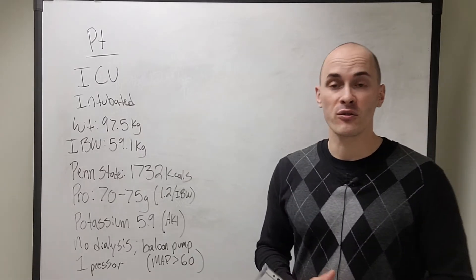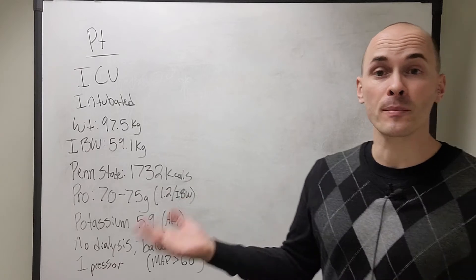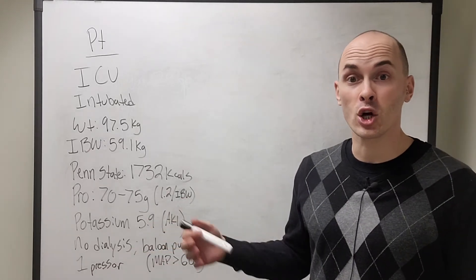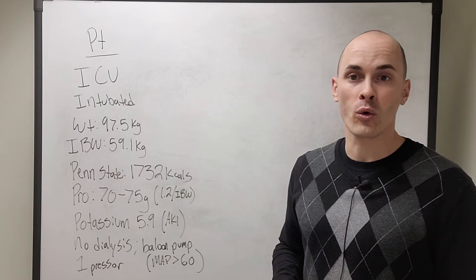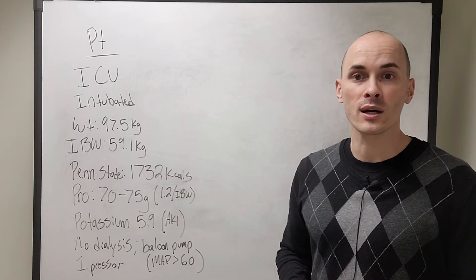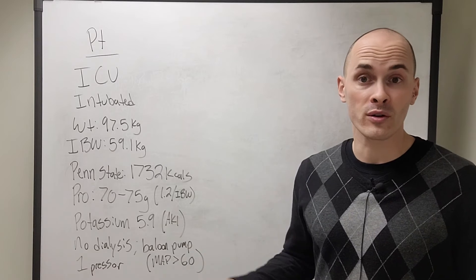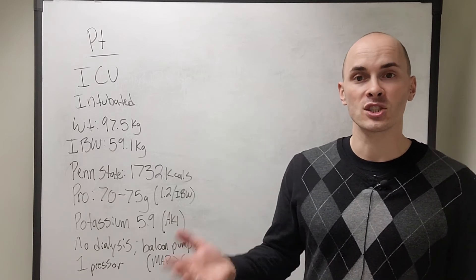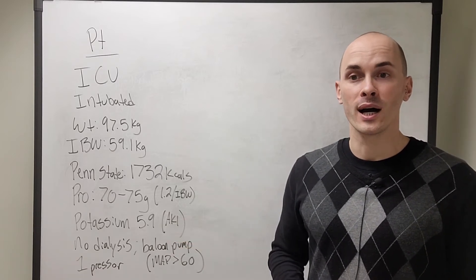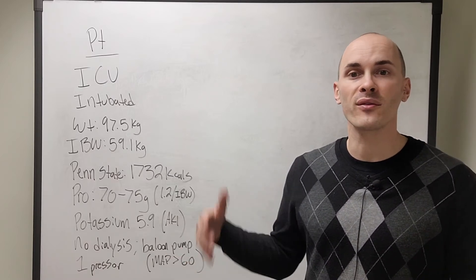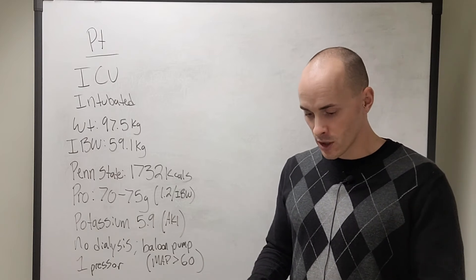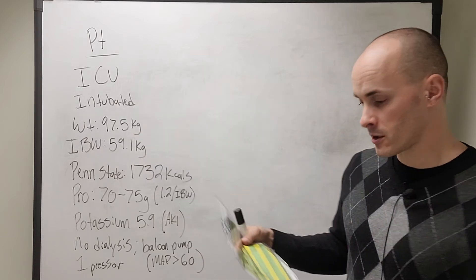If the dietician at follow up goes to see the patient and they are on dialysis, they can always switch over the formula. So I'm going to run the numbers here for a non-renal formula, and then I'm also going to run the numbers for a renal formula. That way, when the dietician who's following up with me, if they need to switch the formula to a renal specific formula, they'll have the calculations already completed.